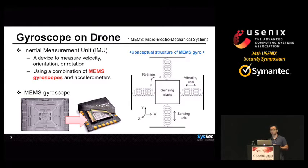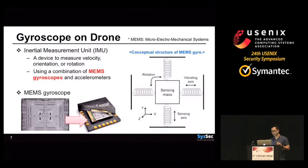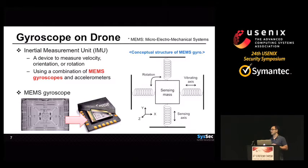This is a conceptual structure of a MEMS gyroscope. There is a sensing mass in the middle of the structure. This sensing mass is continuously vibrating along the x-axis. When rotation occurs along the z-axis, a force also occurs in the y-direction. We can measure this force, and the amount of this force indicates the amount of rotation. Because of this vibrating mechanical structure, mechanical resonance is considered an important factor for the MEMS gyroscope.